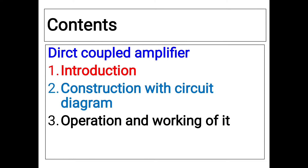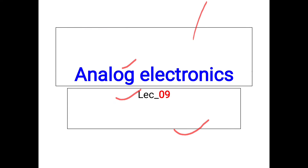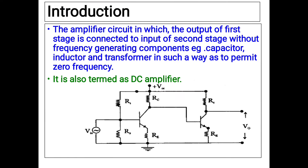Hello guys, in this lecture we will discuss about the direct coupled amplifier circuit. We will discuss in detail about the introduction, construction with circuit diagram, and operation and working of the direct coupled amplifier circuit. This is lecture number nine in analog electronics. If you want to watch the previous lecture then you can click the i button.